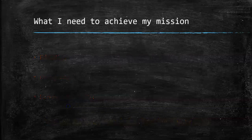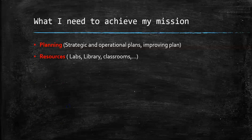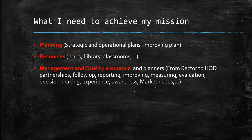What do I need to achieve my mission? Planning — I should have strategic and operational plans, and of course an improving plan. Resources: labs, library, classrooms, infrastructure. Management and quality assurance, and planners from rector to head of department. Partnerships. Follow-up, reporting, improving, measuring, evaluation, decision-making, experience, and awareness.